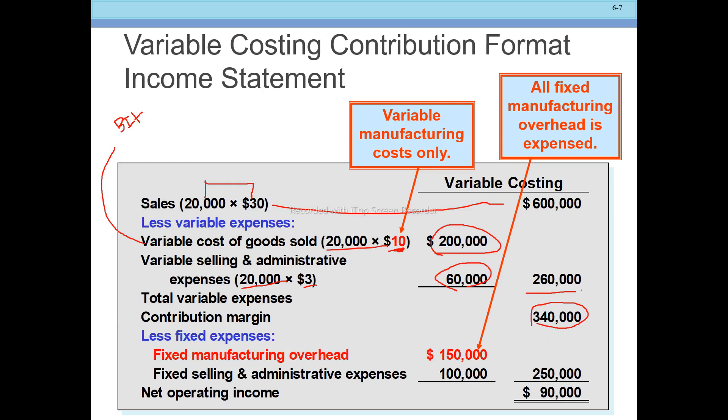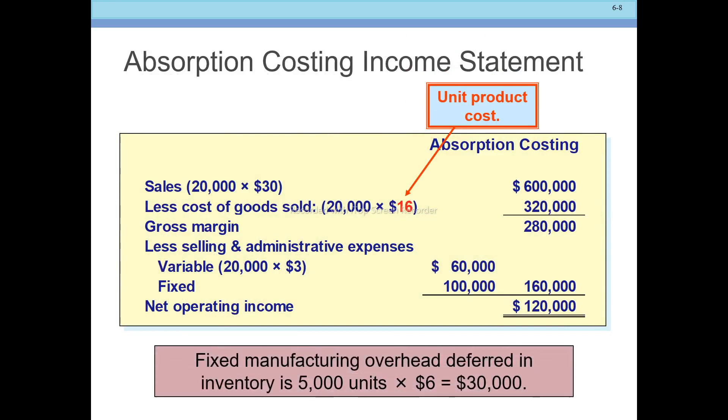Contribution margin is always based on variable costs in the contribution margin format. Any change in cost has an effect on contribution margin. After computing the contribution margin, we subtract fixed costs: fixed manufacturing overhead is treated as a period cost under variable costing, and fixed selling and administrative expenses are also deducted to arrive at net operating income.